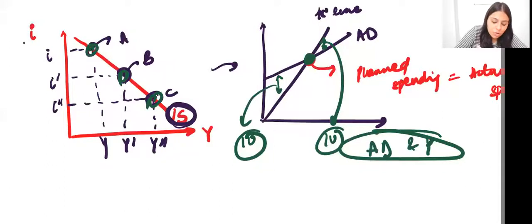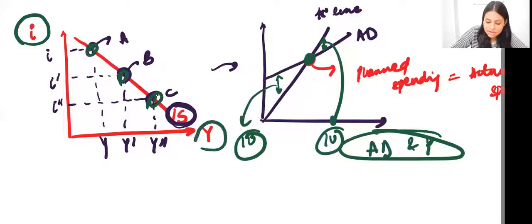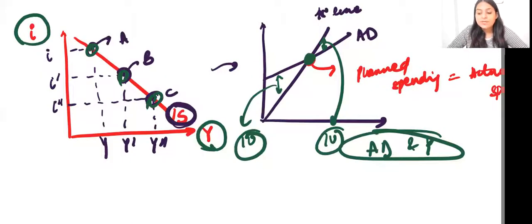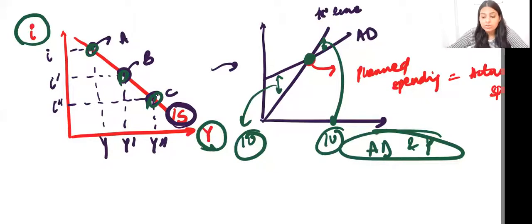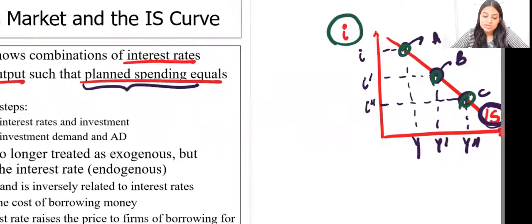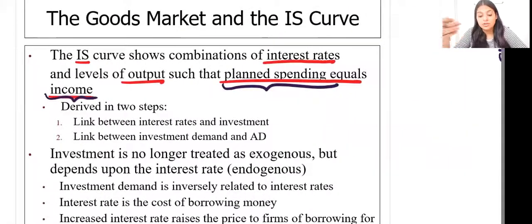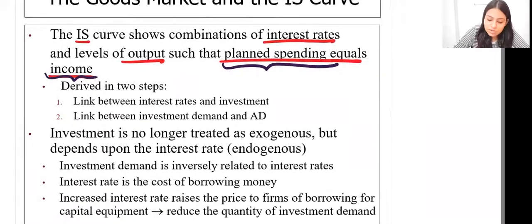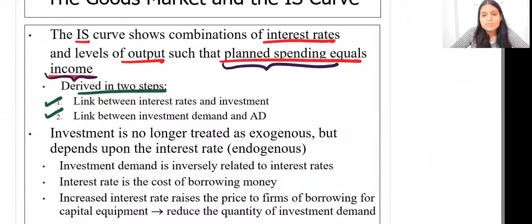The IS curve shows different combinations of interest rate and income such that in the background, planned investment equals actual investment, or planned spending equals income. To derive the IS curve, there are two steps. Step one: we link interest rate and investment.